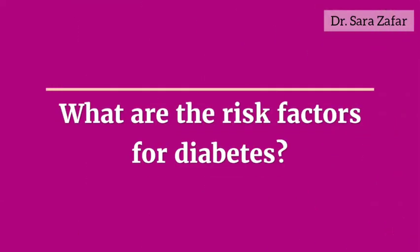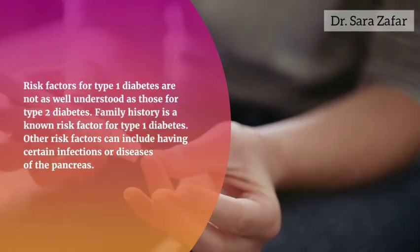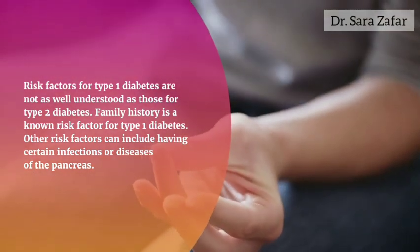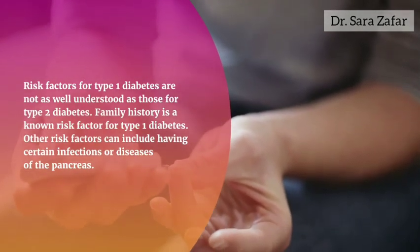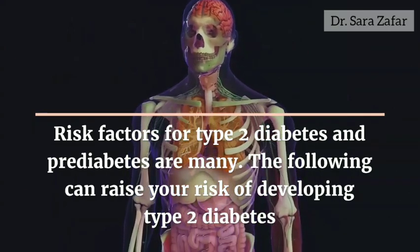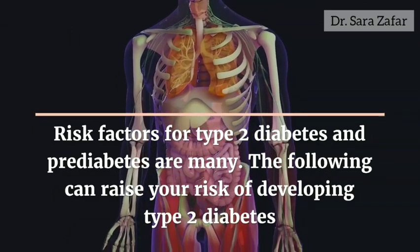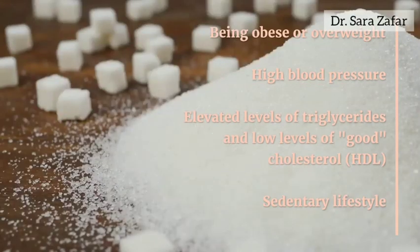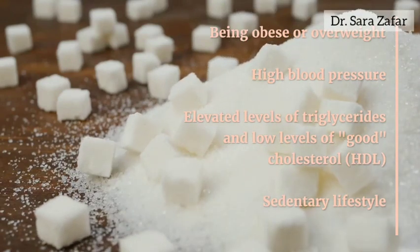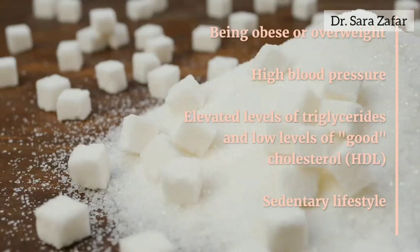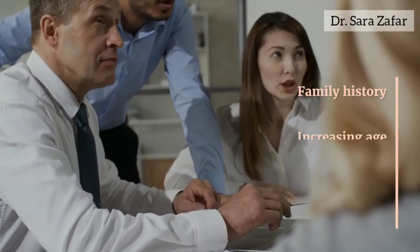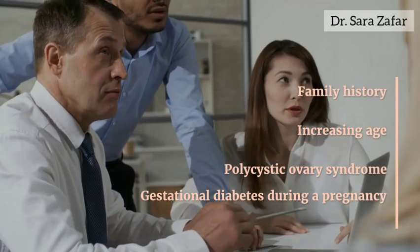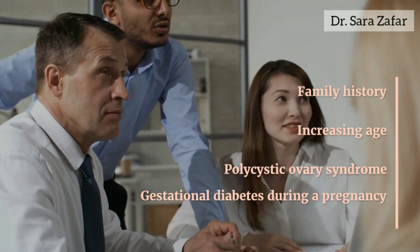Now we will discuss the risk factors for diabetes. Risk factors for type 1 diabetes are not as well understood as those for type 2 diabetes. Family history is a known risk factor for type 1, and other risk factors can include having certain infections or diseases of the pancreas. Risk factors for type 2 diabetes include being obese or overweight, high blood pressure, elevated levels of triglycerides and low levels of good cholesterol (HDL), sedentary lifestyle, family history, increasing age, polycystic ovary syndrome, and gestational diabetes during pregnancy.